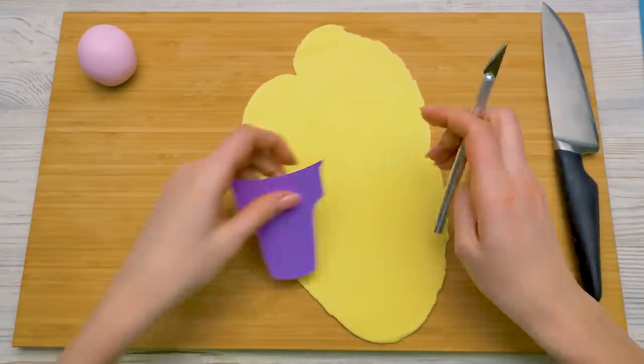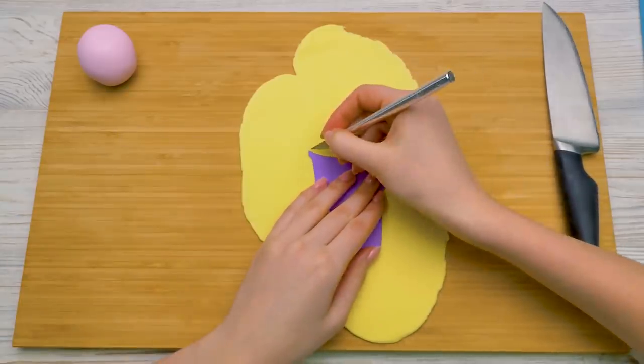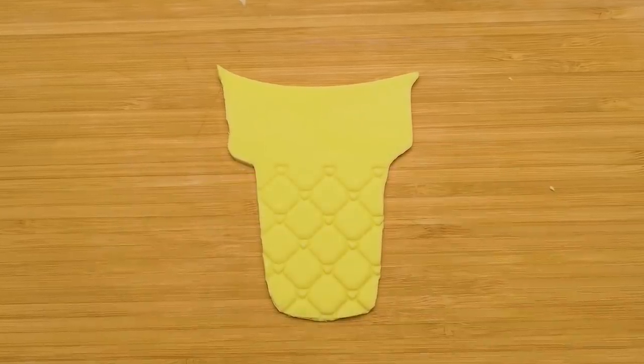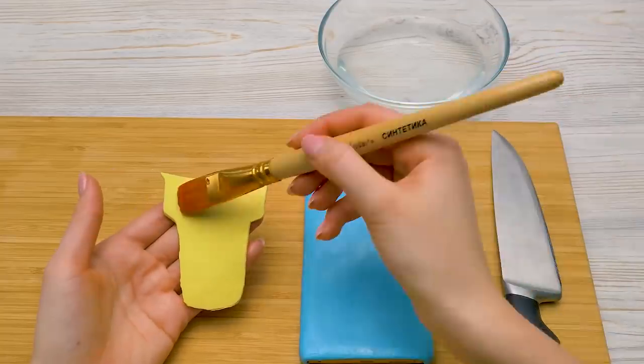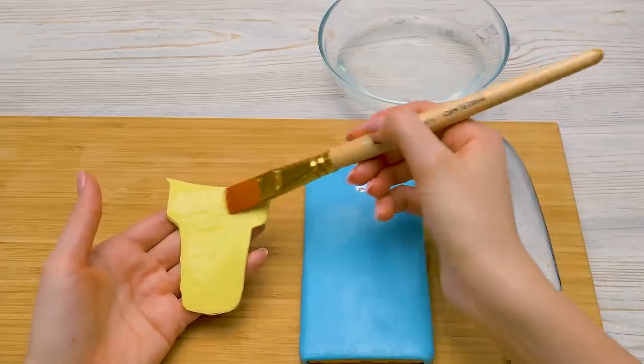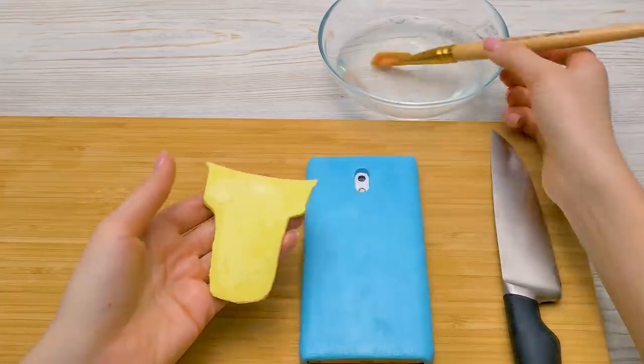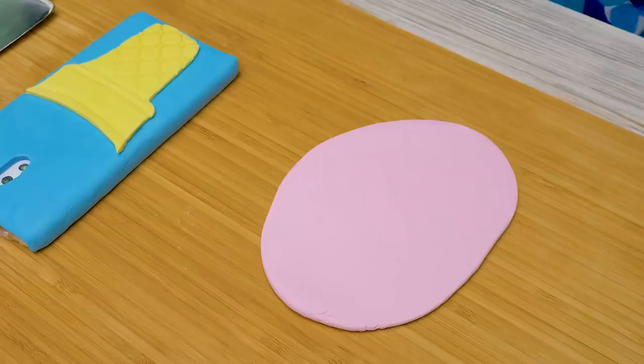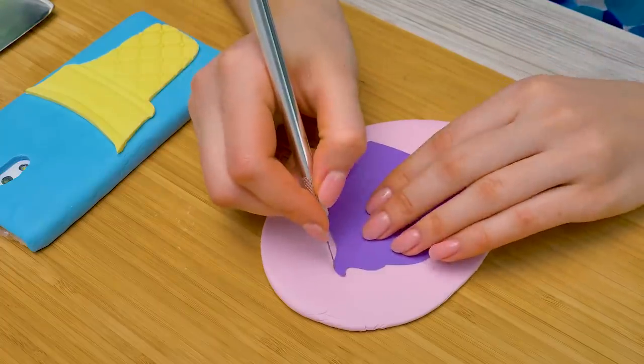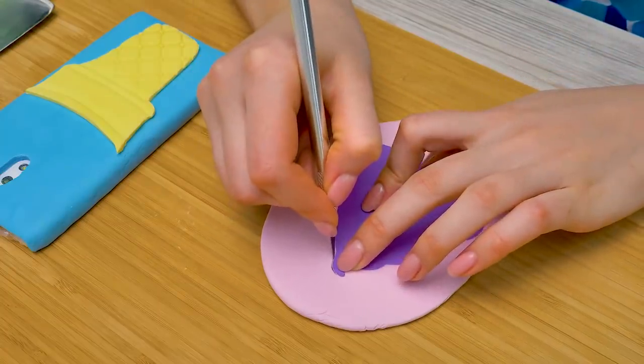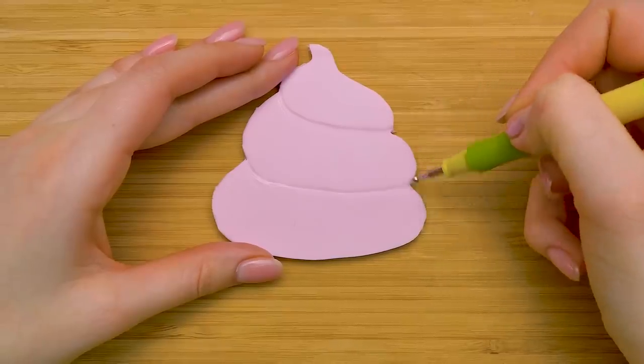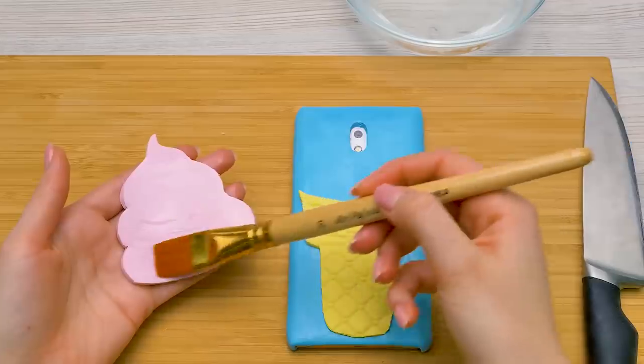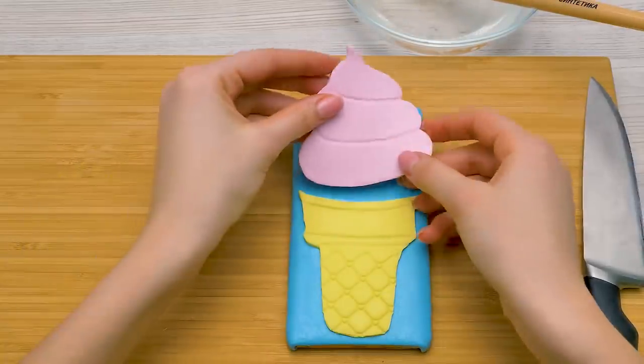Next, I'll take this yellow fondant and cut out the cone using a template. And we can make a pattern on it, like this. Now let's apply some water and glue our cone to the phone case. Water acts like glue for the fondant. And pieces stick really well to each other. Then I'll cut out ice cream using another template and our pink rolled out fondant. Let's make a pattern on it as well. And glue it to the case, just like the cone, with some water.